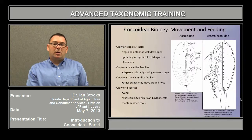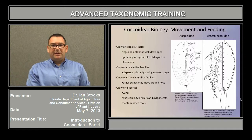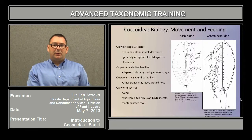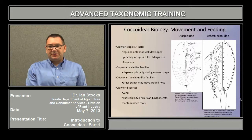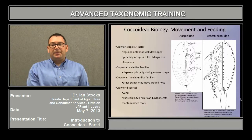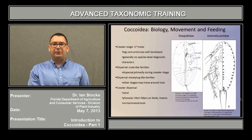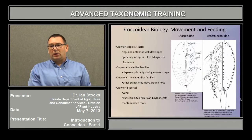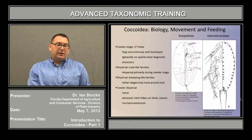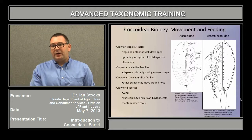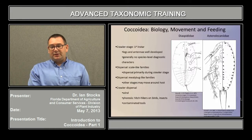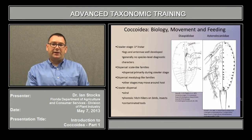Whether they hatch from an egg or are born live from the adult female, the crawler or the first stage instar typically has legs and antennae that are well-developed. This makes sense because as the primary dispersive stage, the legs and antennae are going to help the immature negotiate its way around on plant material in search for the suitable feeding site. Generally, there are no species-level diagnostic characters for the crawler or other immature stages, though there are some cases where the immature stages do have enough characters specific to that species that they can actually be identified quite readily.